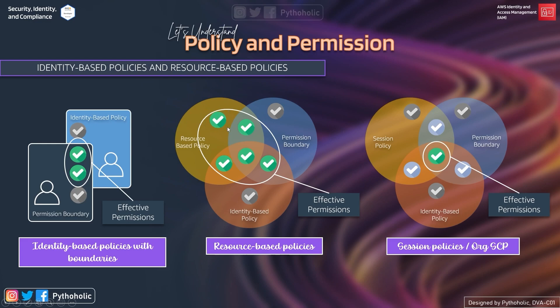Because resource-based policies do not depend on implicit deny, if a resource-based policy is present and the effect is Allow, the permission will be granted — that defines its effective permission. The last type is session-based policies, where the effective permission is the intersection of three policies: session policy, permission boundary, and identity-based policy. And an explicit deny in any of these policies overrides any allow. That covers the differences in effective permissions across all three use case types.